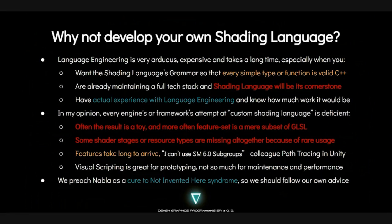You're already developing a whole framework, and then you want to add shading language development to that, just exploding your vertical integration. In my opinion, every engine or framework's attempt at a custom language is basically a toy, or deficient in some way — shader stages are missing, resource types are missing, some new feature drops in SPIR-V or GLSL and it takes ages to arrive. Also, visual scripting is all fun and games until you try and do something quite big by visual script standards but small by CPU programming standards, and you find out that the bottleneck is the editor freezing when you try to drag your visual script around. We say that Nabla is a cure to the not-invented-here syndrome, so you don't have to write your own RHI, and we should really follow our own advice.